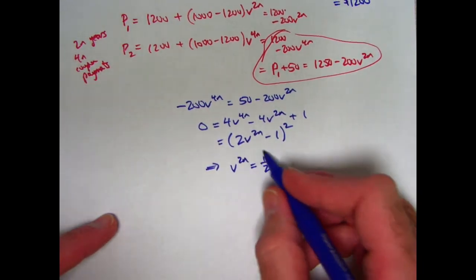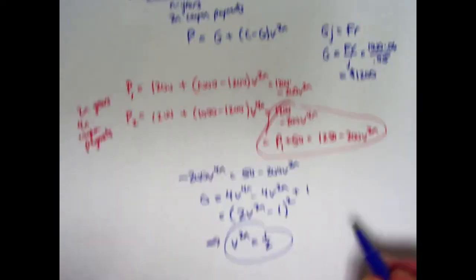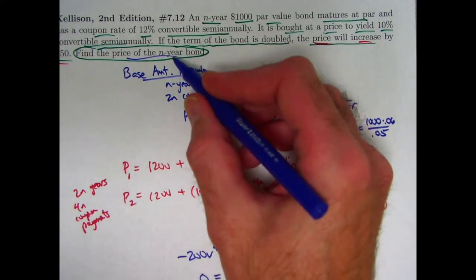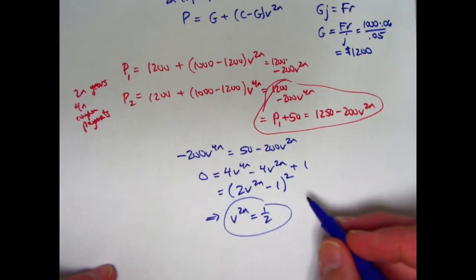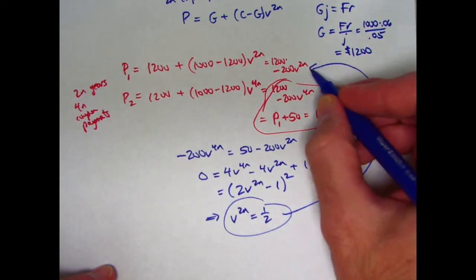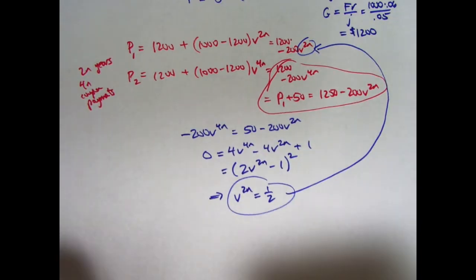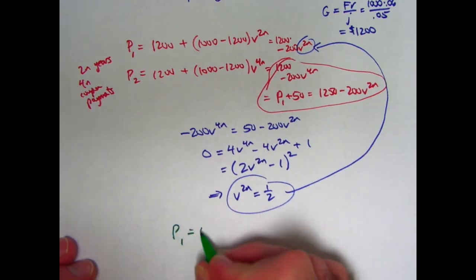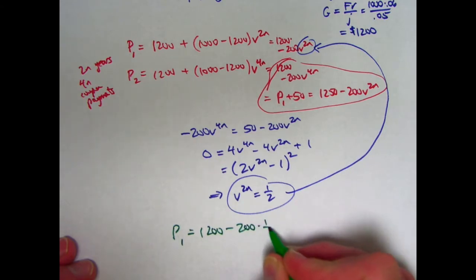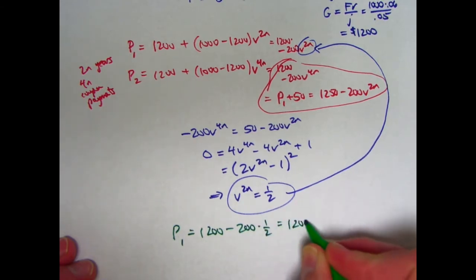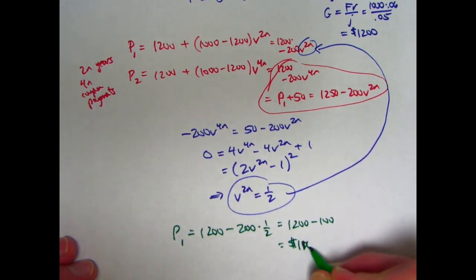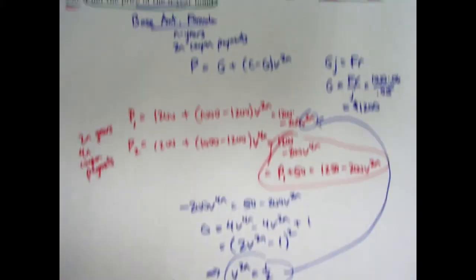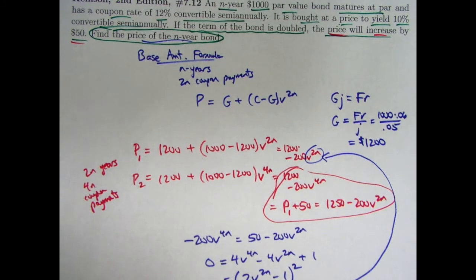And now we can pretty quickly solve the problem. We want to find the price of the original bond. We want to find P1. So substitute that back up. P1 will be 1,200 minus 200 times 1 half. 1,200 minus 100. $1,100 is the price of the original bond, answering the question and finding the price of the n-year bond.